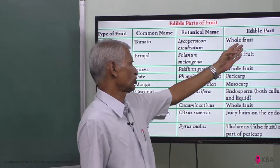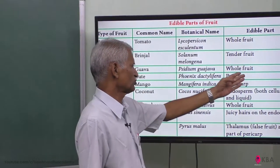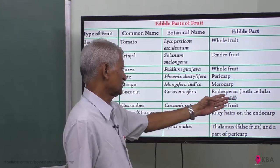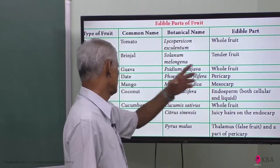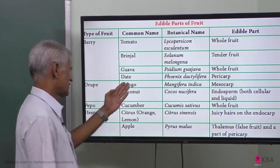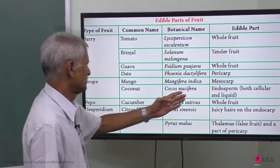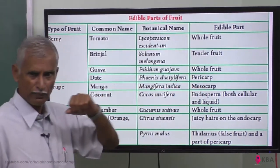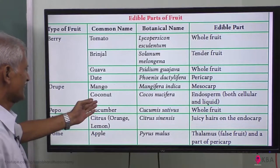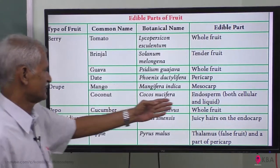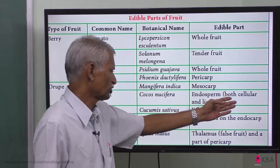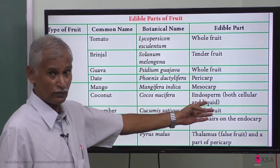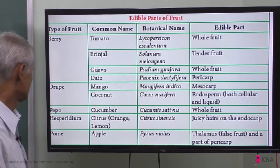The edible part is the whole fruit or tender fruit — the whole pericarp, mesocarp, or endosperm. In the group of mango and coconut: for mango, the mesocarp is the edible part; for coconut, the endosperm — both cellular and liquid type — that is the edible part.